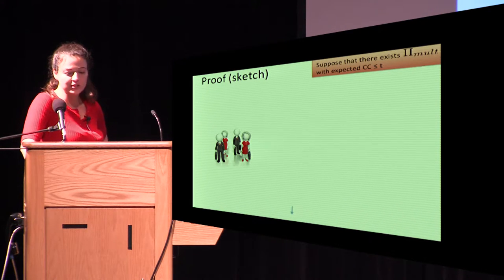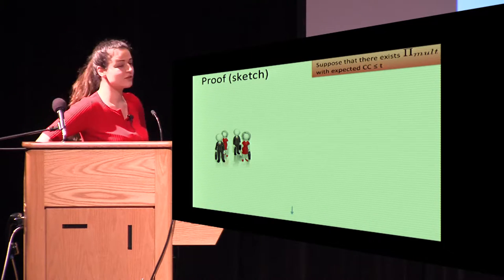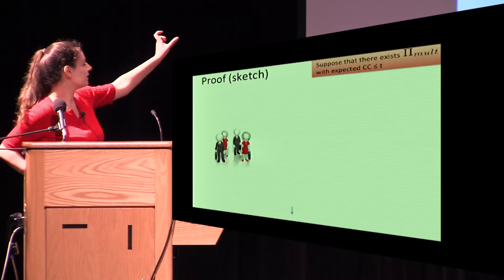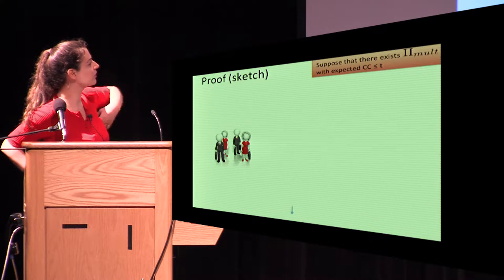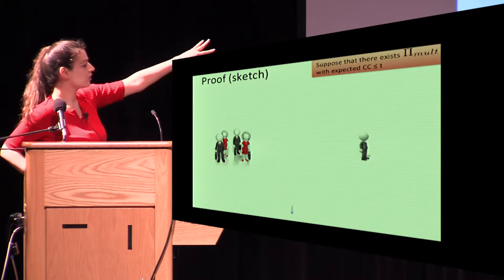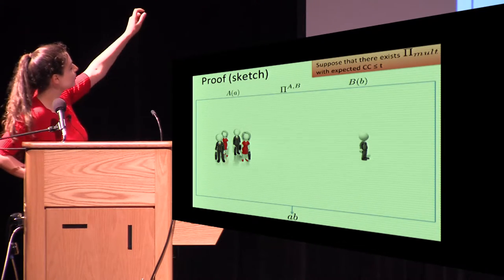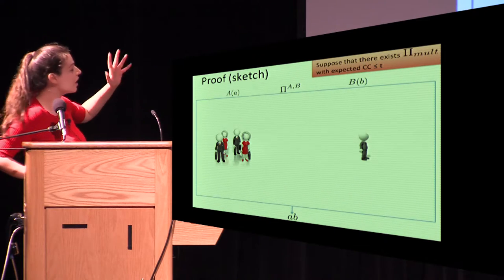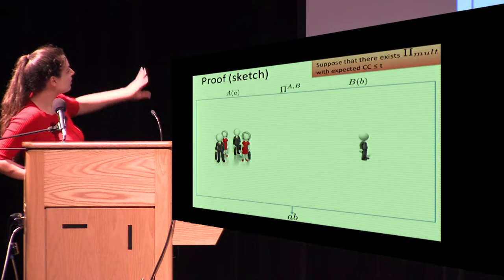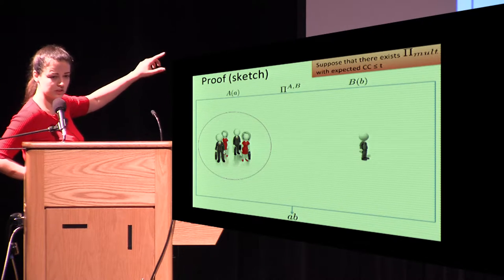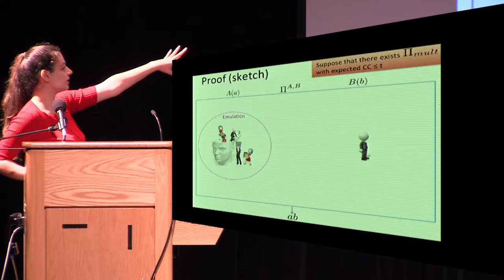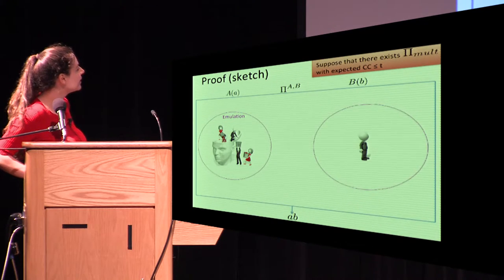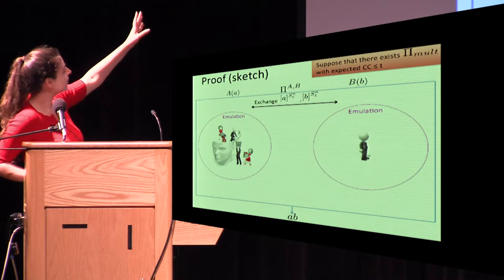Suppose we have a multiplication protocol that is too good and doesn't communicate a lot. We want to prove this is impossible. Assume we have such a protocol with at most t expected communication complexity. We take t parties that communicate among themselves, plus one additional party. We build a two-party protocol computing the product A×B: party Alice emulates all t communicating parties in her head, and party Bob emulates the last party.